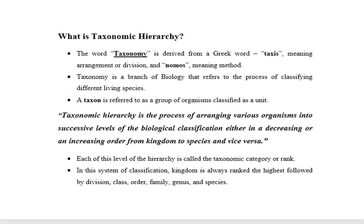In this system of classification, kingdom is always ranked the highest, followed by division, class, order, family, genus, and species.